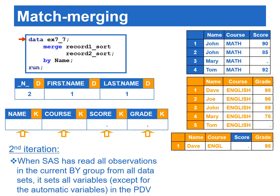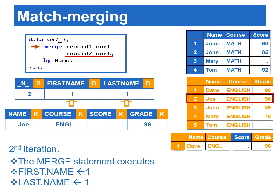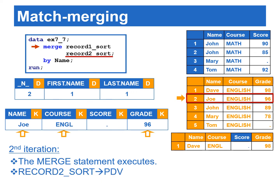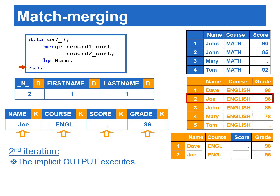At the beginning of the second iteration, SAS has read all observations in the current by group from all data sets. SAS sets all variables in the PDV to missing, except for the automatic variables. Note that this rule is different from reading a SAS data set using the set statement. The second by group is when name equals Joe — there is only one observation in this by group. When the merge statement executes, first.name and last.name are set to one. The second record where name equals Joe from record two sort is copied to the PDV. SAS reaches the end of the data step, and the implicit output copies the contents from the PDV to the output data.